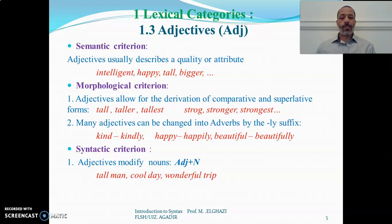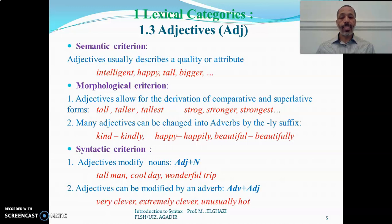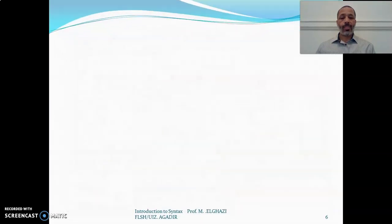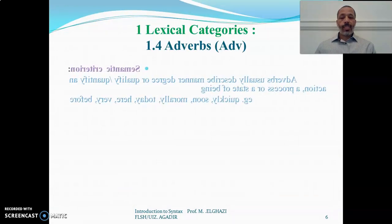Examples of adjectives occurring before the noun include: 'full man', 'cool day', 'wonderful trip'. In some cases, adjectives can occur after the noun, such as 'the authority general'. Adjectives can also be modified by an adverb — for example, 'very clever', 'extremely clever', 'usually hot', and so on.